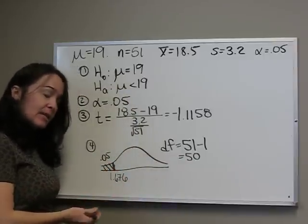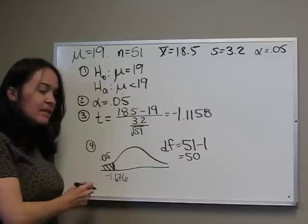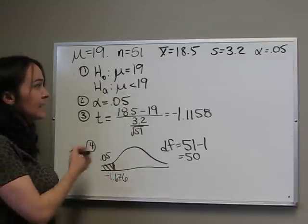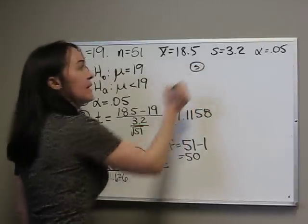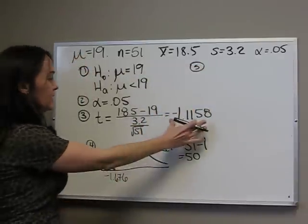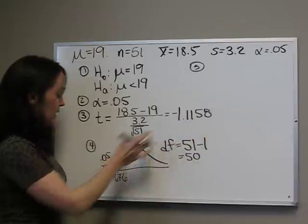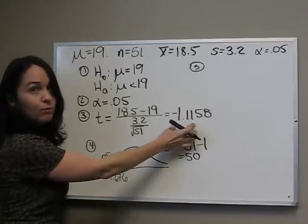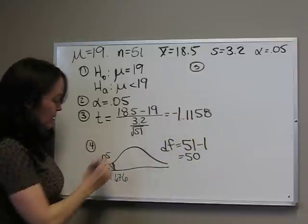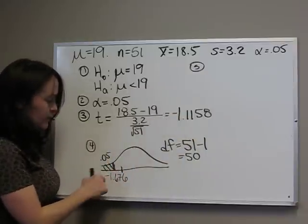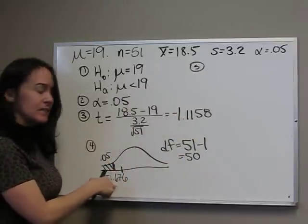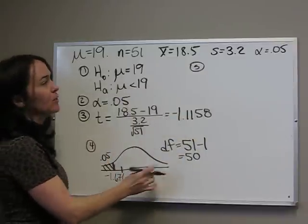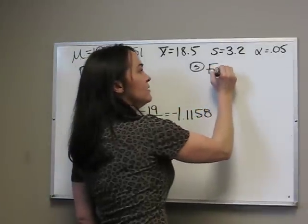Now, since it's a left-tail test, remember, it's going to just be the negative. Now, step five. We look to see if our step three is in the rejection region or the non-rejection region. Negative 1.11 is actually above negative 1.676, and it's in the non-rejection region. So, we fail to reject.